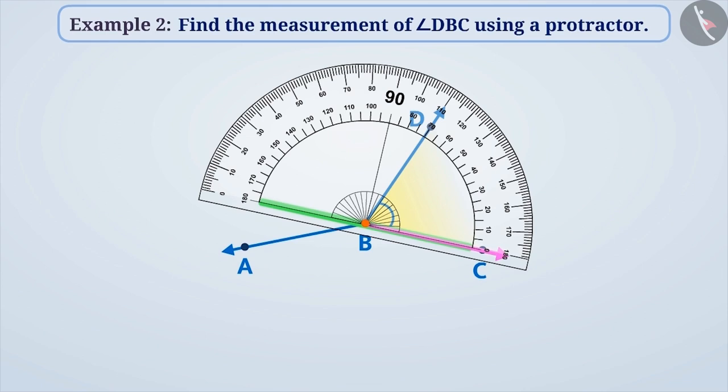Like here, it completely covers line BC. Now, here the protractor is placed correctly at an angle so we can measure the angle.